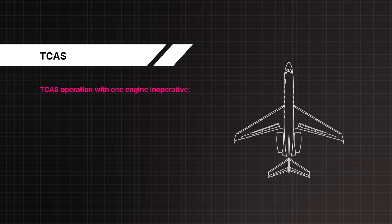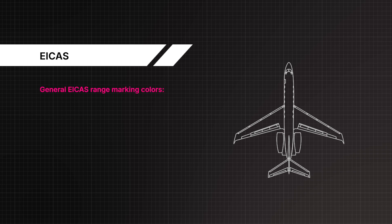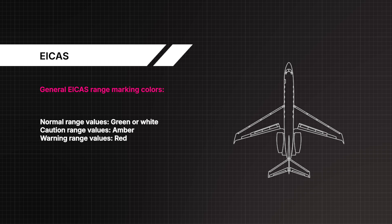TCAS operation with one engine inoperative: select TA only as the operating mode. General ICAS range marking colours: normal range values — green or white; caution range values — amber; warning range values — red.